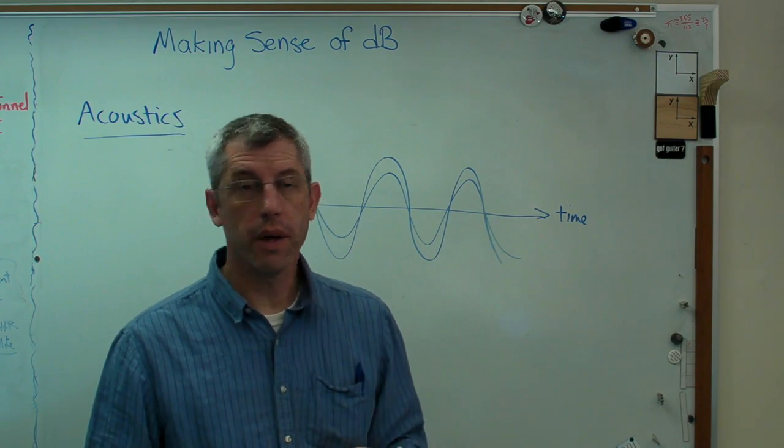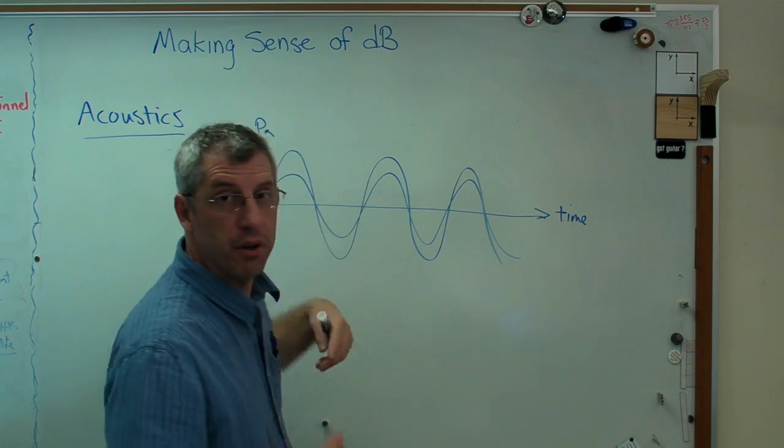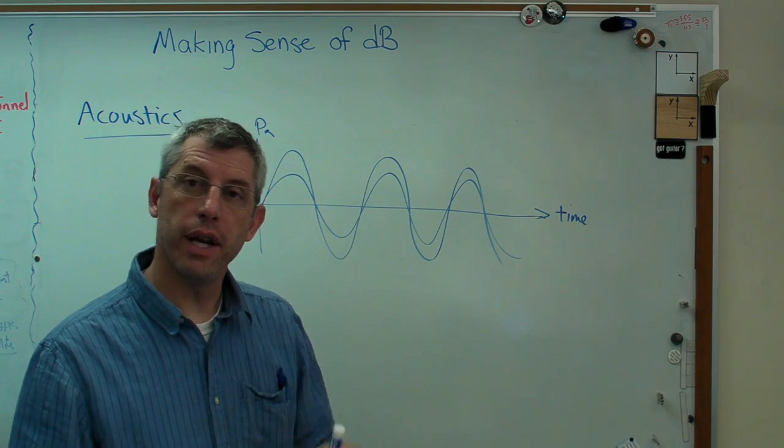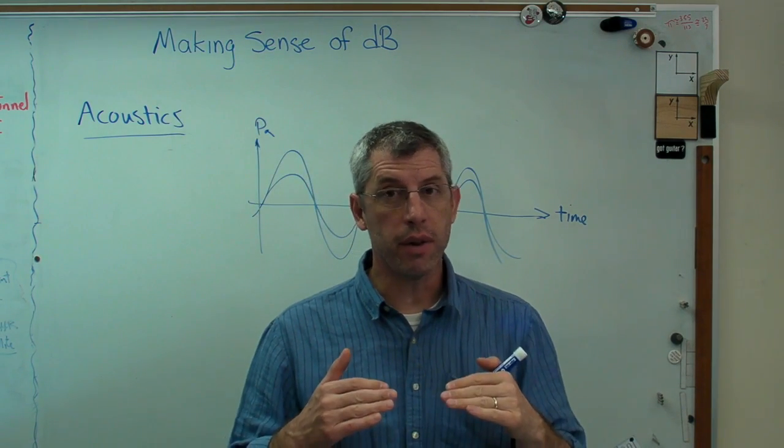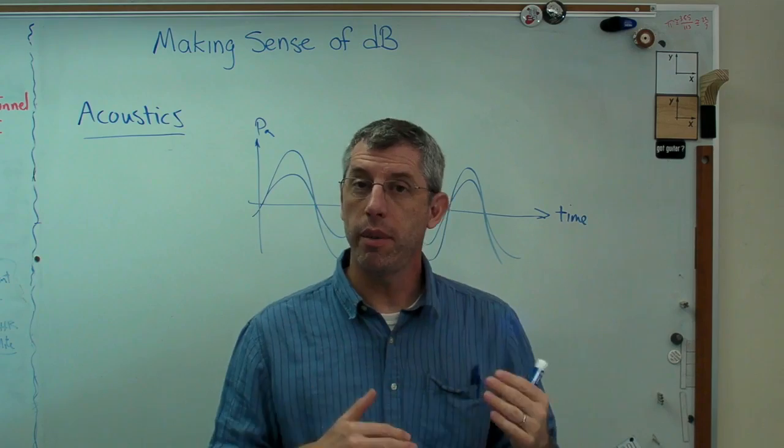It turns out RMS is where it's at. RMS is root mean square. So you square the signal, find the mean of that, and then take the square root. So that way, if you increase the amplitude, even if the mean is zero, the RMS still goes up.